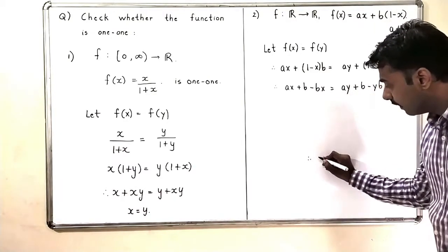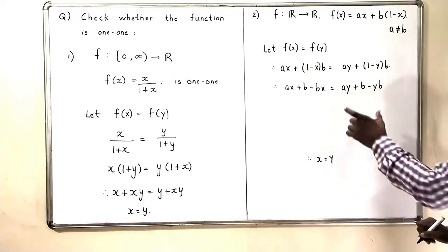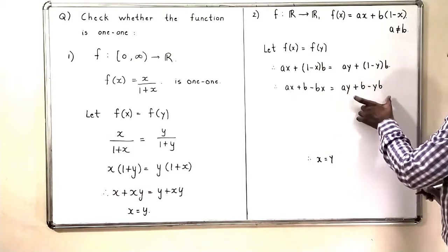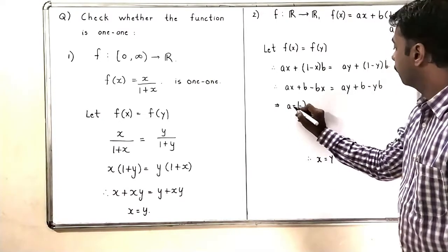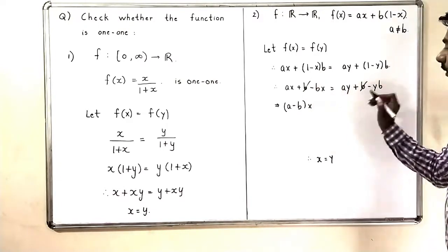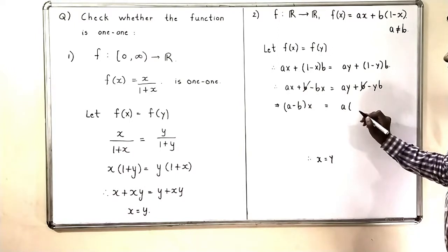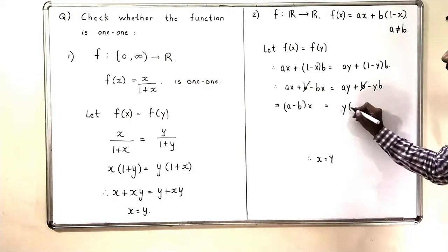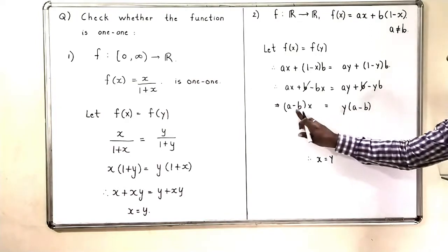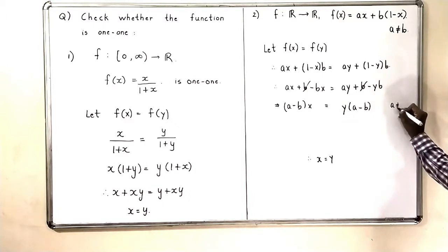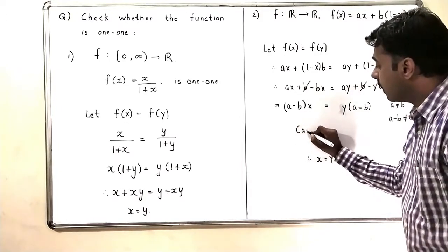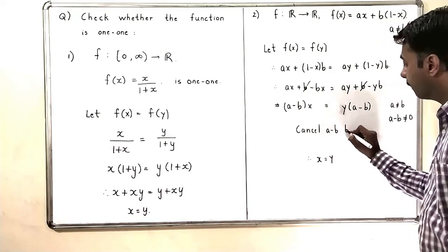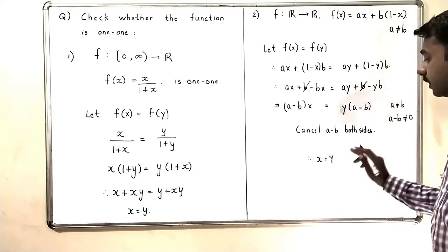We want to check whether x = y. I keep the terms of x together and the terms of y together. I get (a - b)x = (a - b)y. Since a and b are not equal, (a - b) is certainly not equal to 0. So I can cancel (a - b) from both sides, giving x = y.